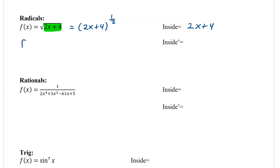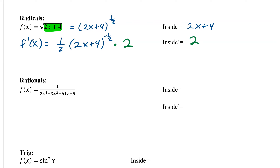So now our f prime of x would equal one-half times (2x plus 4), and then we subtract 1, giving negative one-half. Then we multiply by the derivative of the inside. The derivative of 2x plus 4 is 2. So we've used chain rule: our inside is 2x plus 4, we took the derivative, multiplied it by 2, and that is our full derivative.